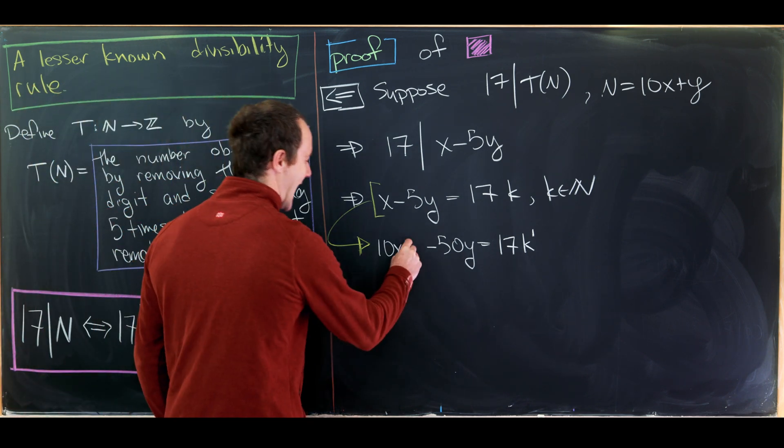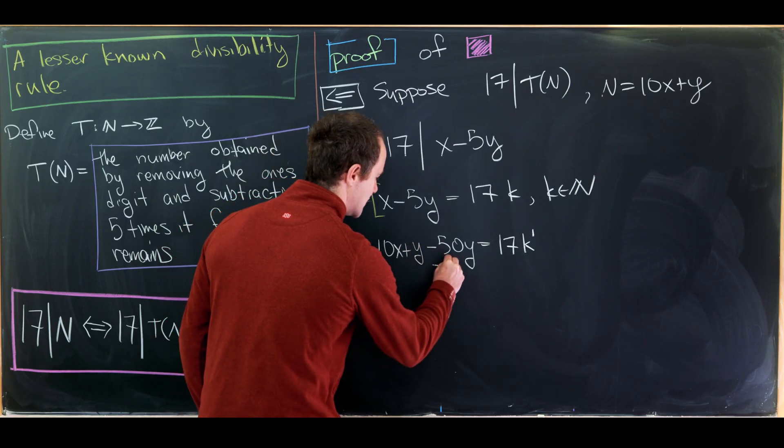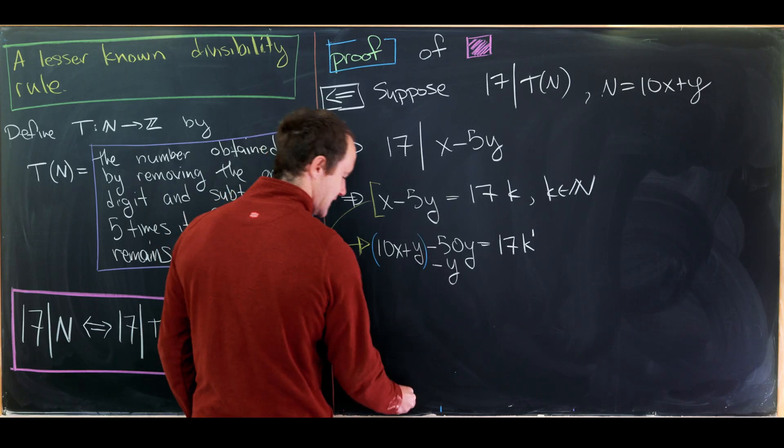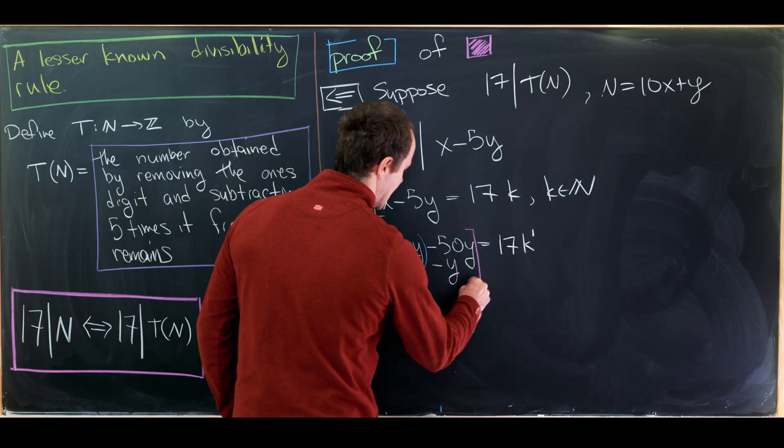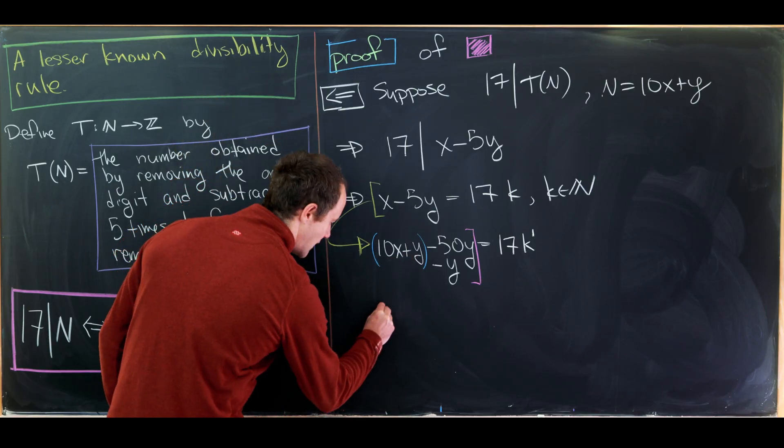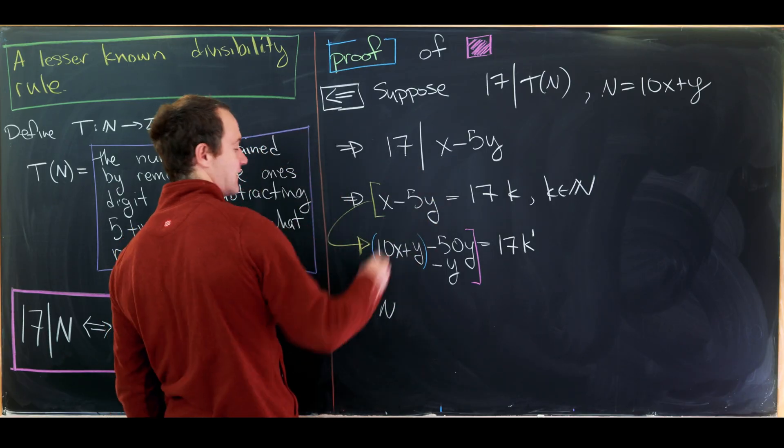So now we're going to add a y in here and we'll also subtract a y. Again, sort of building the same thing that we saw before. And now let's combine these to see what we have. So this 10x plus y is equal to n based off our setup.